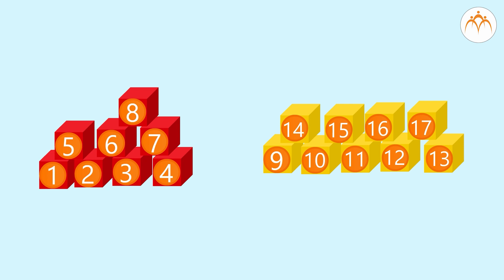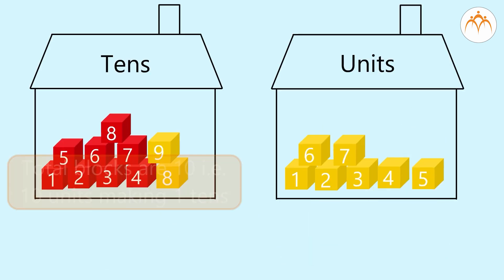But again, we shall separate 10 blocks out of it. Now, the total blocks are 10, that is 10 units making 1 ten, and remaining make 1 ten and 7 units. See, we have made a pyramid.